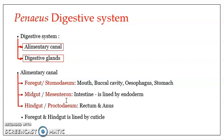The foregut and the hindgut are lined by chitinous cuticle. The stomodeum and the proctodeum are provided with a cuticular lining which is in continuation with the outer covering — the outer body is covered with chitinous cuticle, and this continues into the stomodeum and proctodeum forming the internal cuticular lining. The midgut is not provided with any cuticular lining; instead it has an endodermal lining. That is the difference between the midgut, foregut, and hindgut.